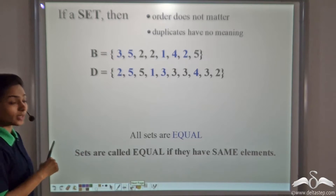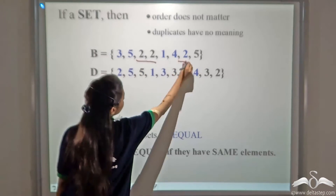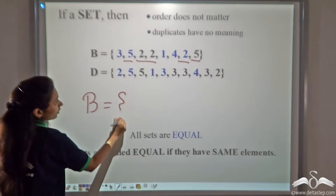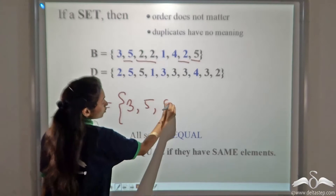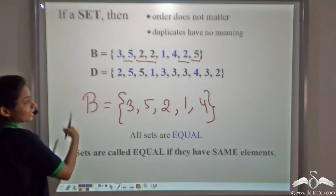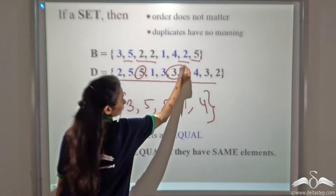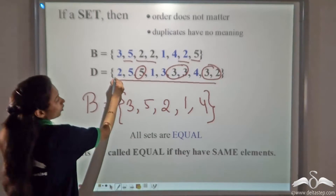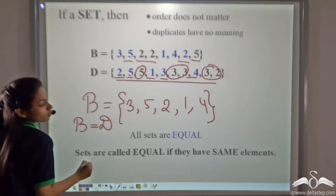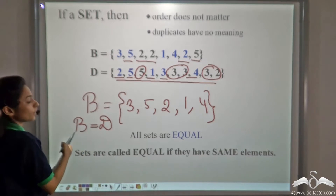We also learnt that duplicates have no meaning. So we have set B here — it contains many duplicates of 2 and one duplicate of 5. So we write set B as 3, 5, 2, 1 and 4. Now if you see set D, it also has the same elements but again has duplicates. B also has the same elements as D, so B is equal to D. Sets are called equal if they have the same elements.